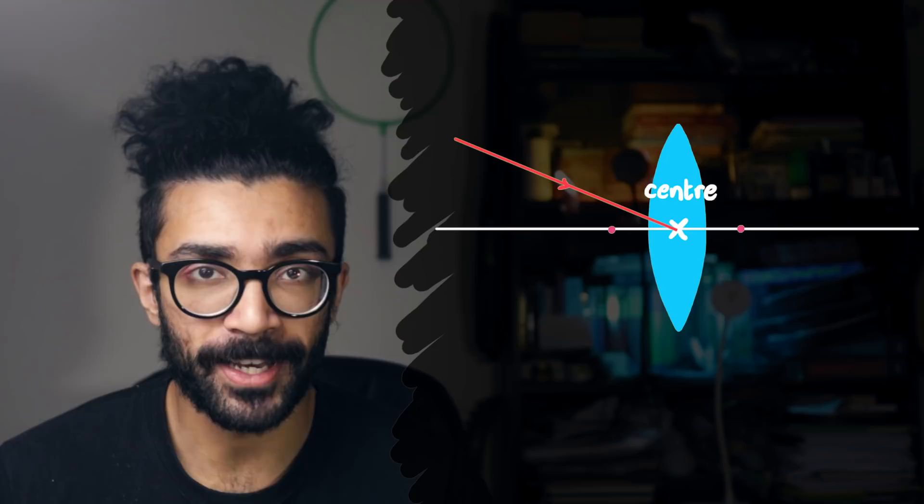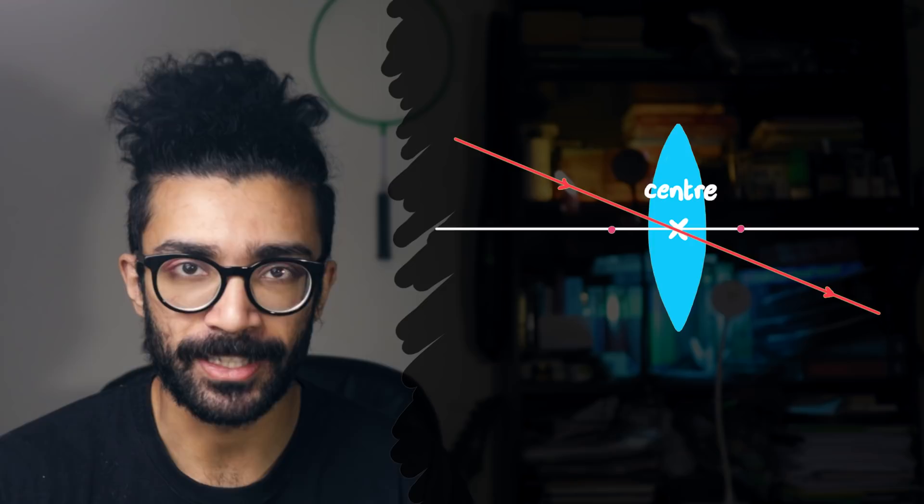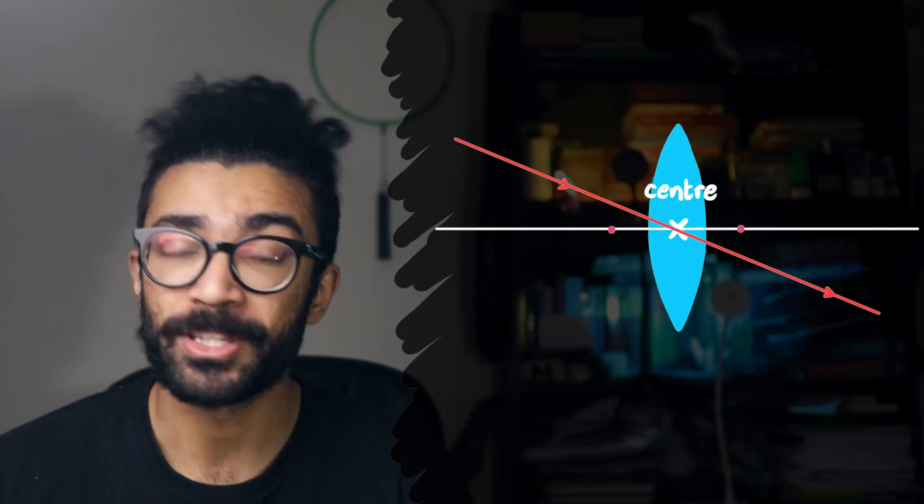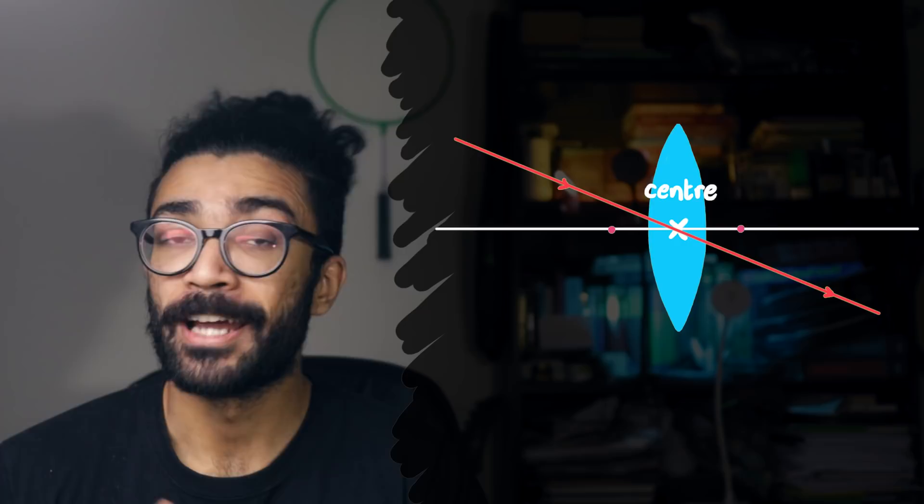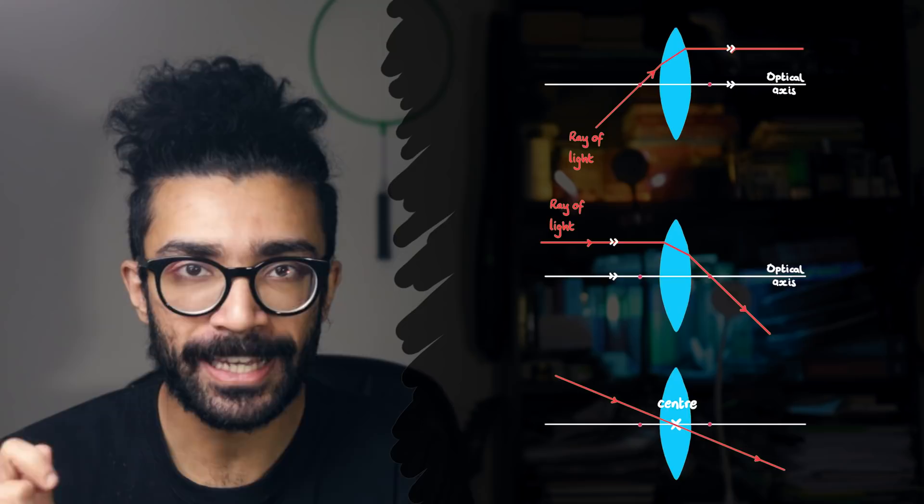Now, this is one of the simplifications we discussed earlier. An ideal lens behaves like this, but a real lens behaves very slightly differently. But this simplification is very close to the truth, and it makes our life a lot simpler, so we'll stick with it. Now, with these three rules that we've discussed, we will be able to think about how the lens produces an image for a particular object placed on one side of the lens.